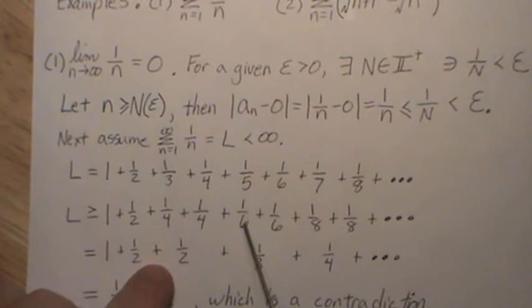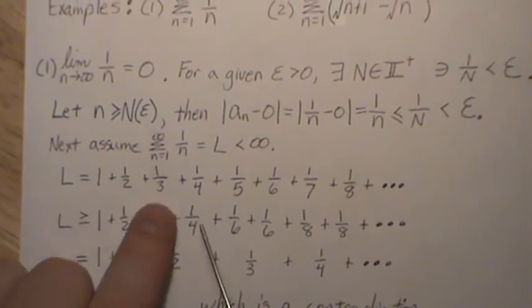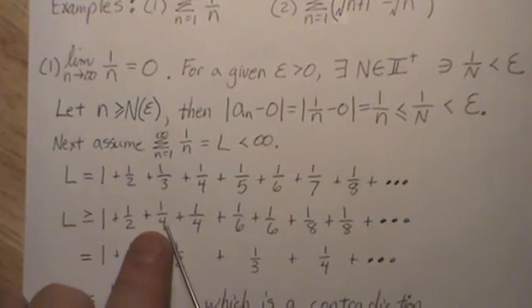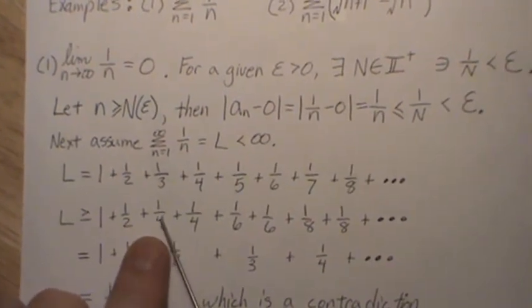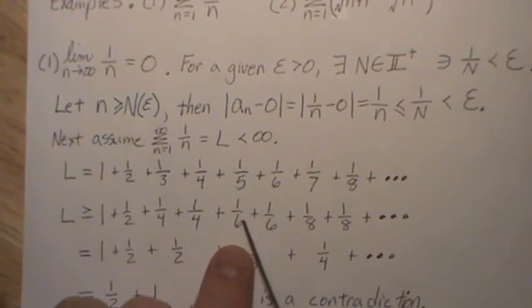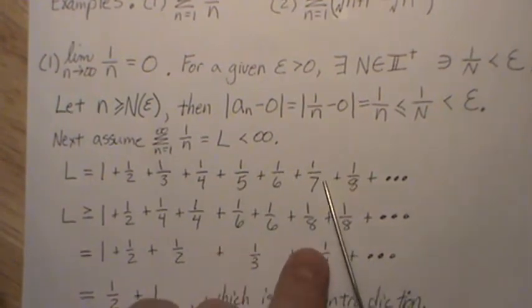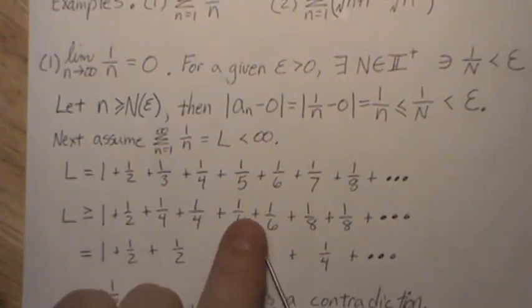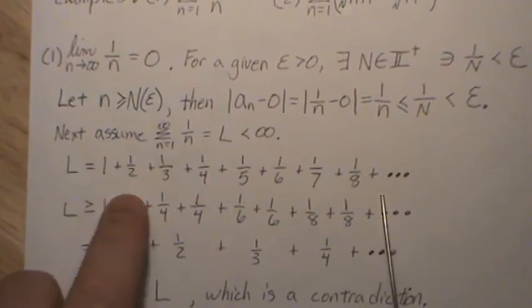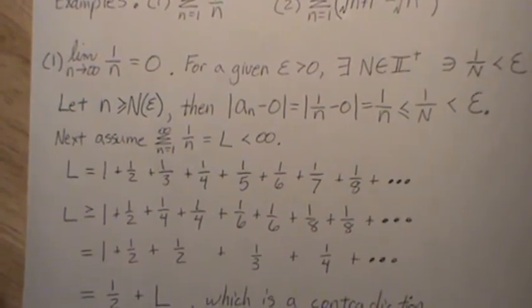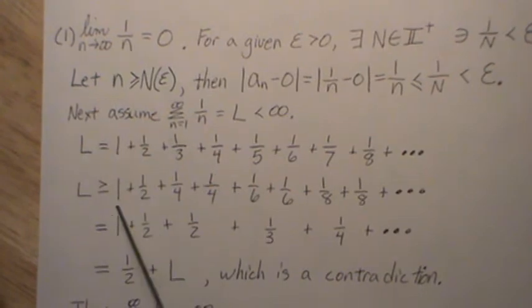But if we change every other term, so if this one third, if we make one fourth, so this just got a little bit smaller, right? In the same way, instead of one fifth we make it one sixth, instead of one seventh we make it one eighth. So every other one we make it one bigger, so this sequence is actually smaller than this sequence.